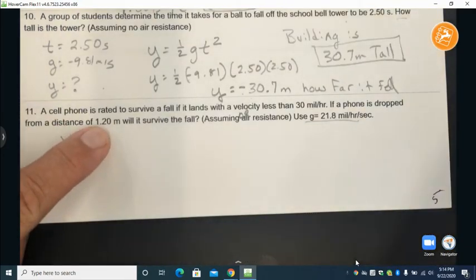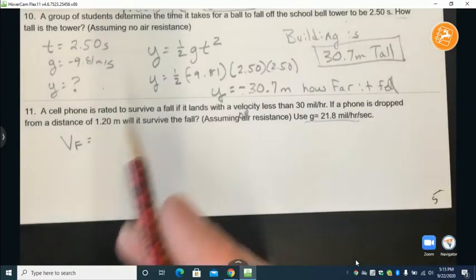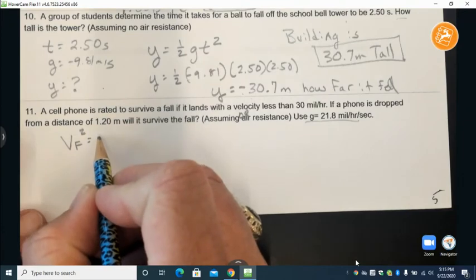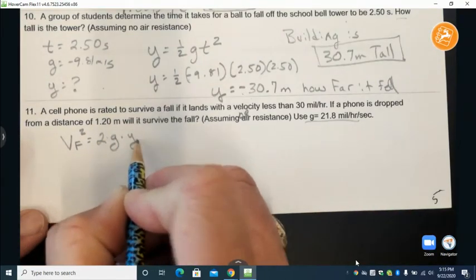In this expression we're given height so we'll use the second expression here. VF squared equals twice gravity times how far it falls.